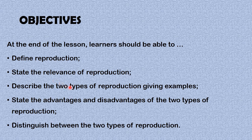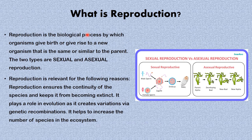Further objectives include: describe the two types of reproduction giving examples, state the advantages and disadvantages of the two modes of reproduction, and distinguish between the two types or modes of reproduction. Moving on to answer the question: what is reproduction?